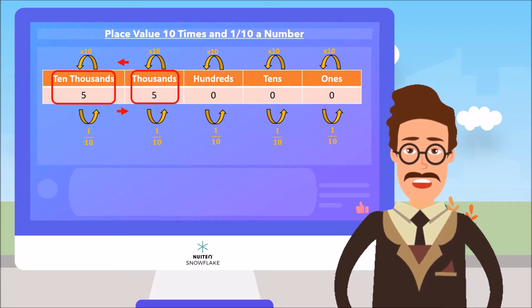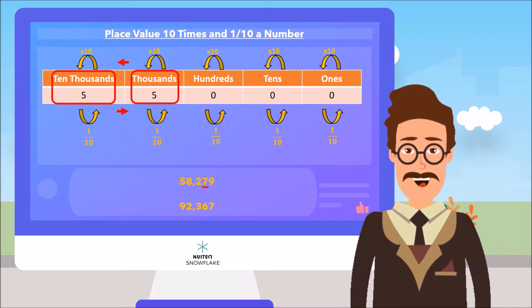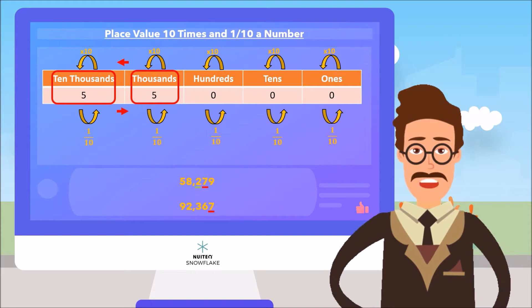If you're given two numbers, you can compare the values of their digits. 58,279 and 92,367. The value of the 7 in the first number is 10 times the value of the 7 in the second number. The value of the 2 in the first number is 1 tenth the value of the 2 in the second number.